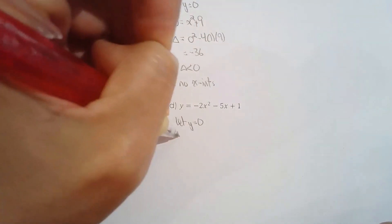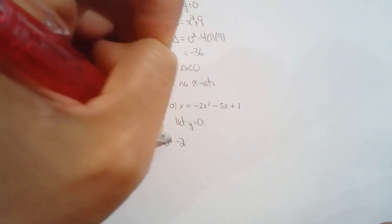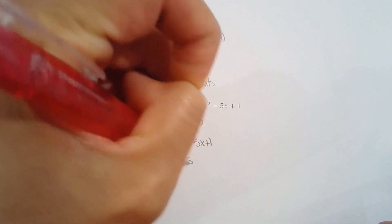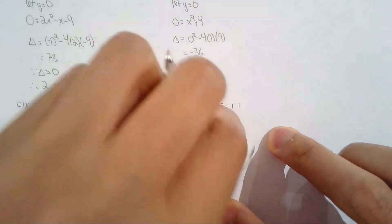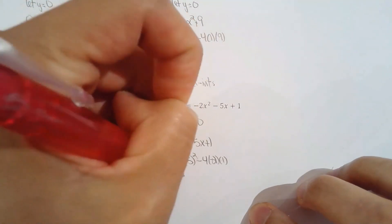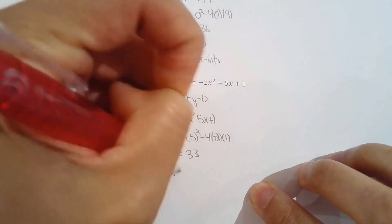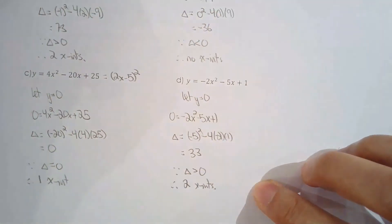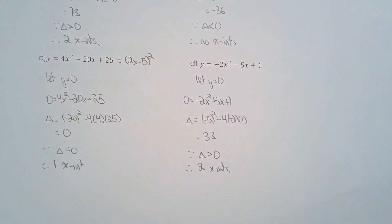Last one: let y equal zero, giving negative 2x squared minus 5x plus 1. The discriminant is negative 5 squared minus 4ac: that's 25 plus 8 = 33. Since the discriminant is greater than zero, there are two x-intercepts. So we've covered the discriminant and have one more lesson to go — solving some word problems.